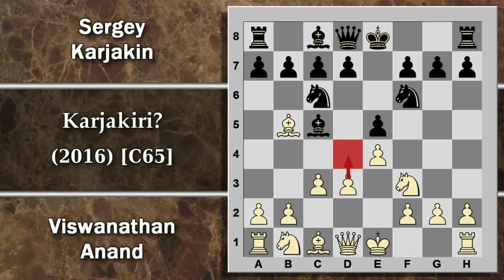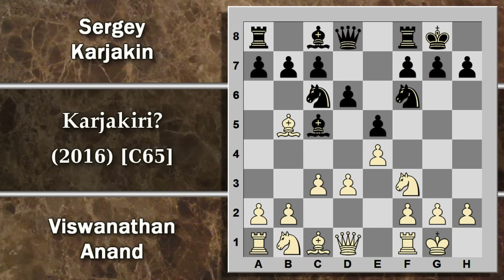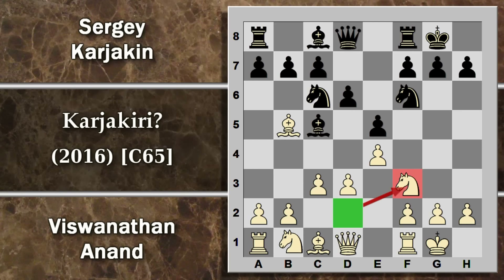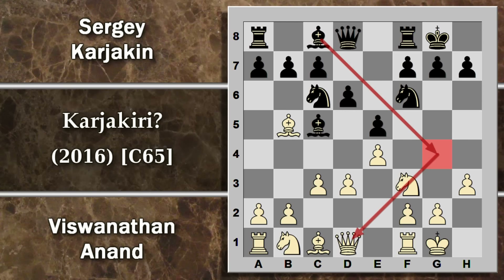C3 con l'idea di spingere D4. Entrambi arroccano; D6 apre la via per l'alfiere. H3 viene giocata per precauzione per bloccare l'eventuale inchiodatura che potrebbe essere fastidiosa. In altri casi si può giocare anche cavallo BD2 che difende l'altro cavallo. Dopo D6 e H3, Karjakin gioca cavallo E7.